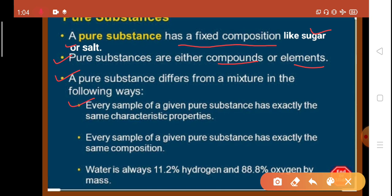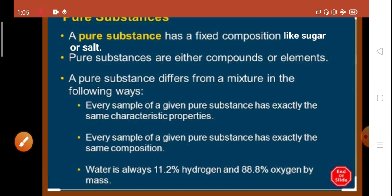Pure substances are either compounds or elements. A pure substance differs from a mixture in the following ways. Every sample of a given pure substance has exactly the same characteristic properties. Every sample has exactly the same composition. For example, water is always 11.2% hydrogen and 88.8% oxygen by mass.